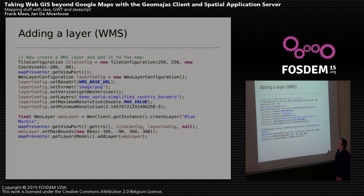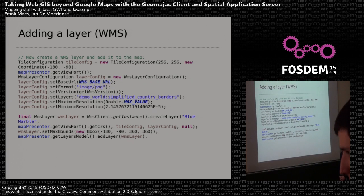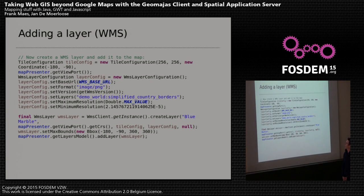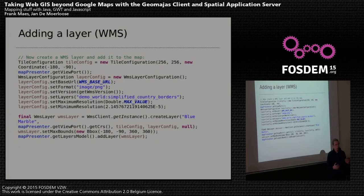The same approach applies for WMS. In this case we also define a tile configuration — a base URL, a format, a version of WMS — and we add the layer name, the type name in the WMS. Then we use the WMS client get-instance, create the layer, and add it to the map.